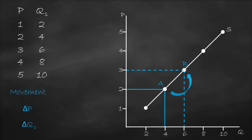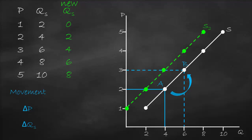Now let's assume that the government is going to impose taxes on suppliers. Therefore we will have a new quantity supplied which will be lower: at a price of one it will be zero units, at a price of two it will be two, then we have four, six, eight. Let's draw it: at price of one, new quantity supplied is zero; at price of two, it's two; at price of three, it's four; at price of four, it's six; at price of five, it's eight. Let's connect all these points — this gives us a new supply curve, which is Supply 2. So what happened? Our supply curve shifted to the left.